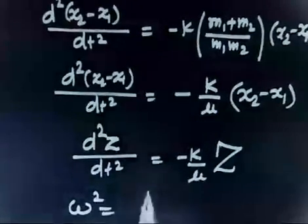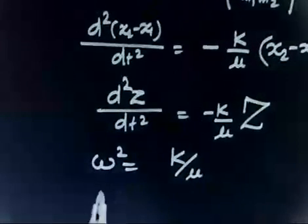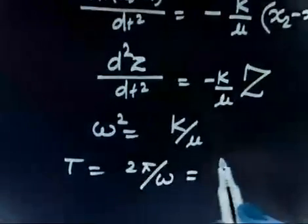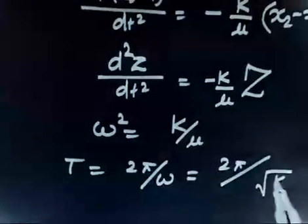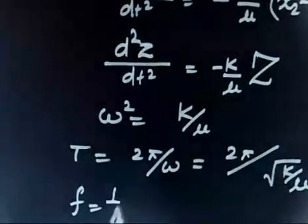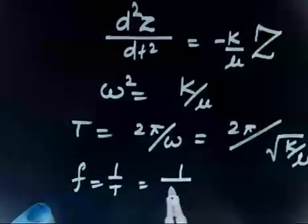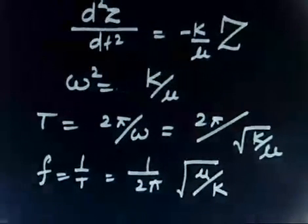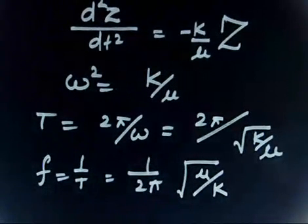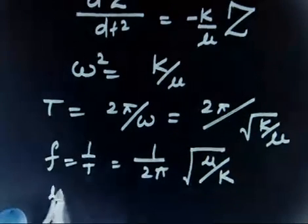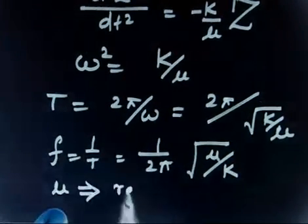This is the equation of SHM, where ω² = k/μ. The time period is T = 2π/ω = 2π√(μ/k), and the frequency is f = 1/T = (1/2π)√(k/μ). The reduced mass μ = m1·m2/(m1 + m2) — this confirms the formula we set out to prove.